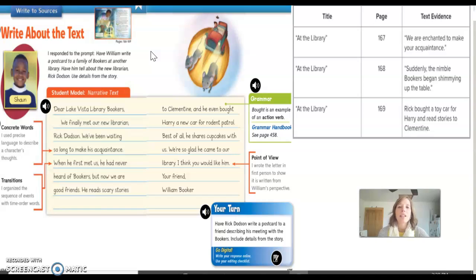So if we analyze this prompt, we ask, what is the prompt asking us to do or asking Sean to do? The prompt is asking Sean to write a postcard to a family of bookers at another library.